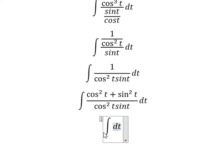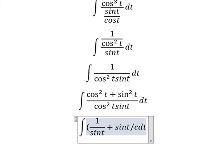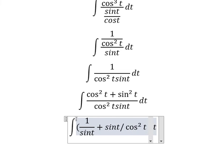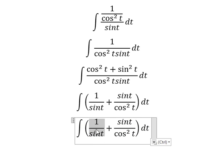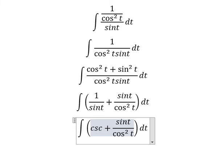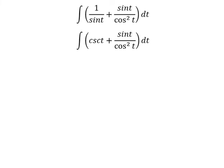The first one and the second one. This one we change for cosecant of t. The integral of cosecant t gives us negative ln of the absolute value of cosecant t plus cotangent t.